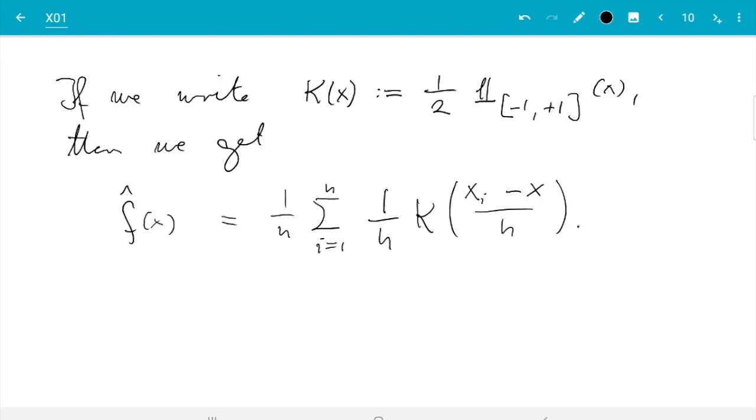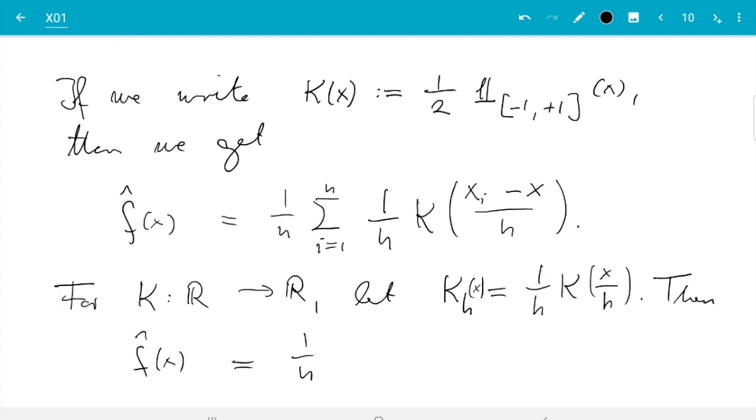For a reason you will see in a second, there is one more substitution I want to make. Namely, I want to do this rescaling with h also as a shorthand for a function k which goes from R to R. Let k_h be the rescaled function: k_h(x) = (1/h)k(x/h). And then f̂ suddenly looks very simple. So that's 1/n sum from i=1 to n, k_h(x_i - x).